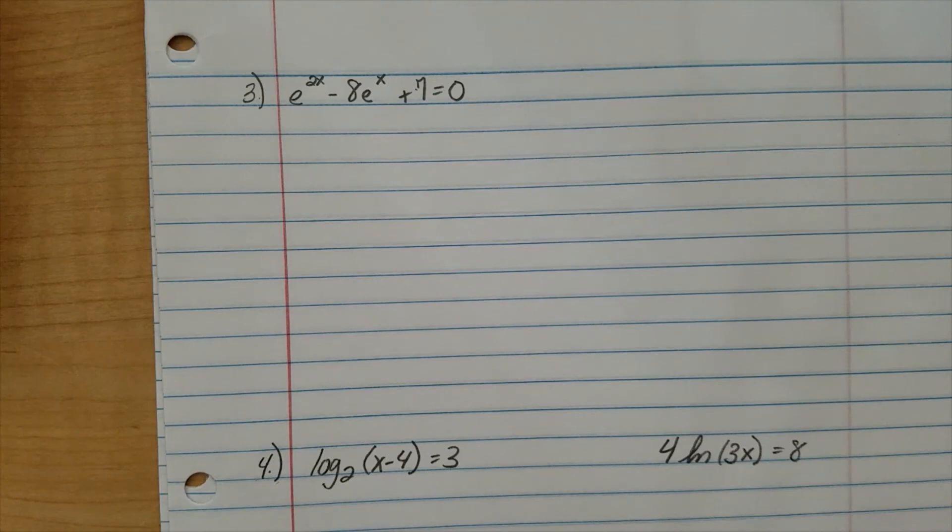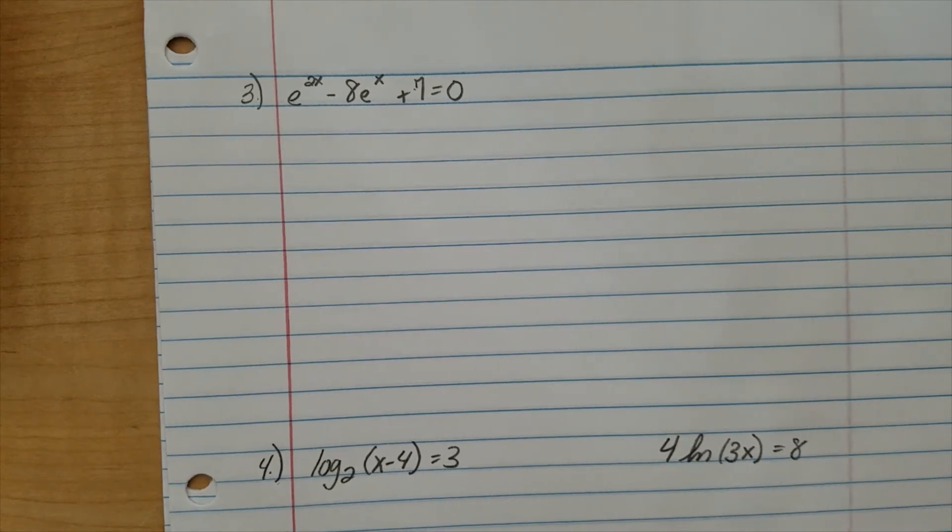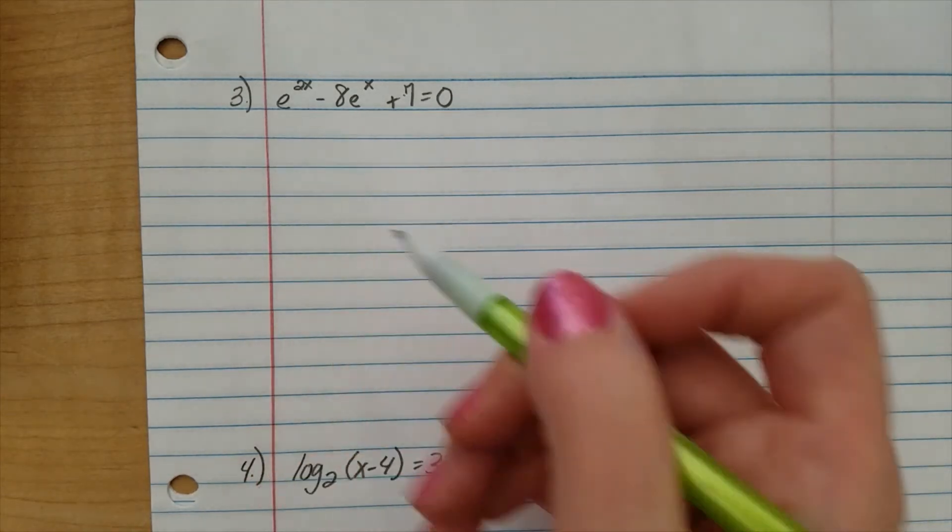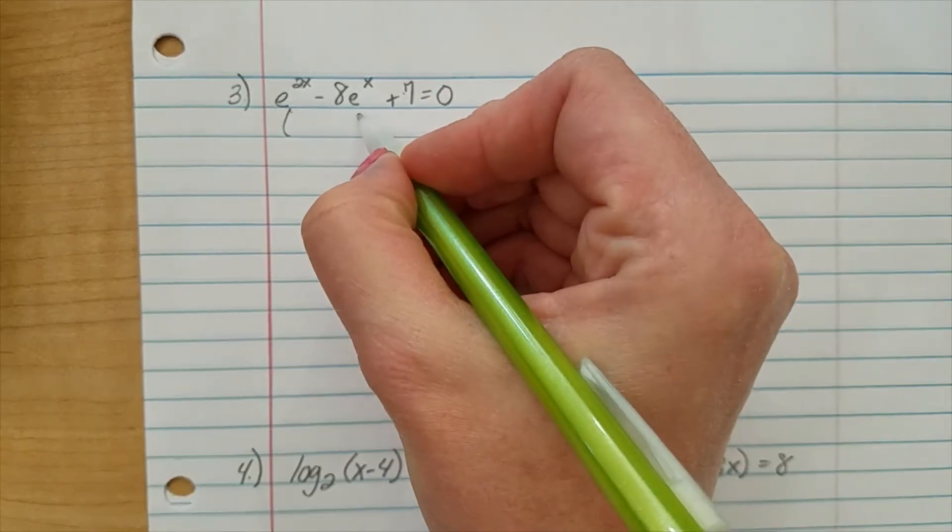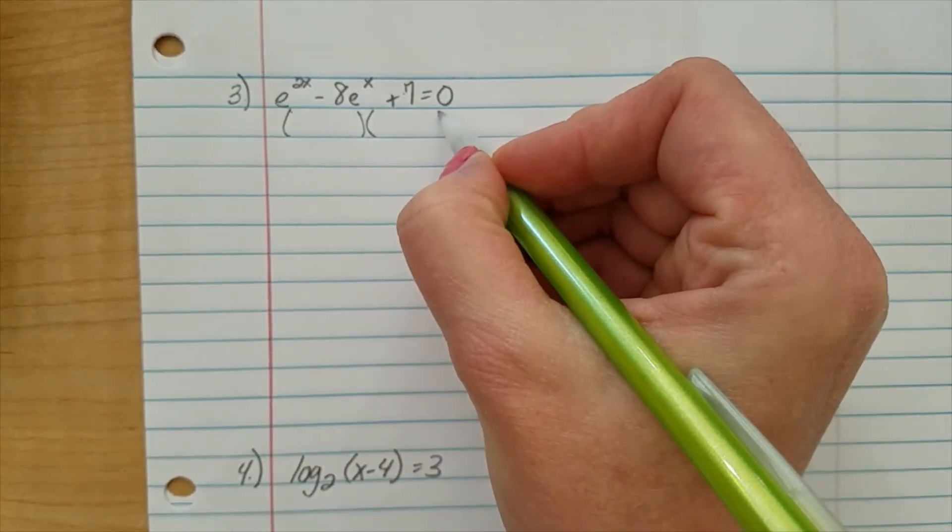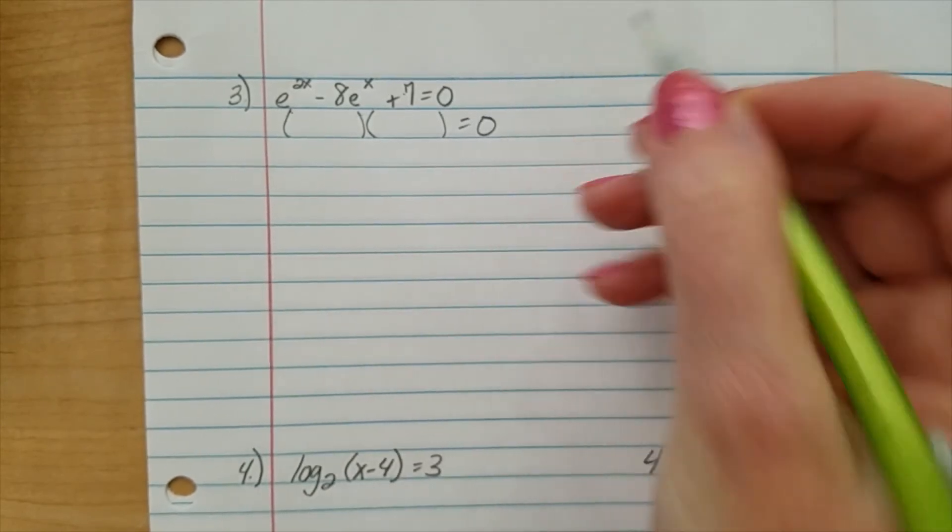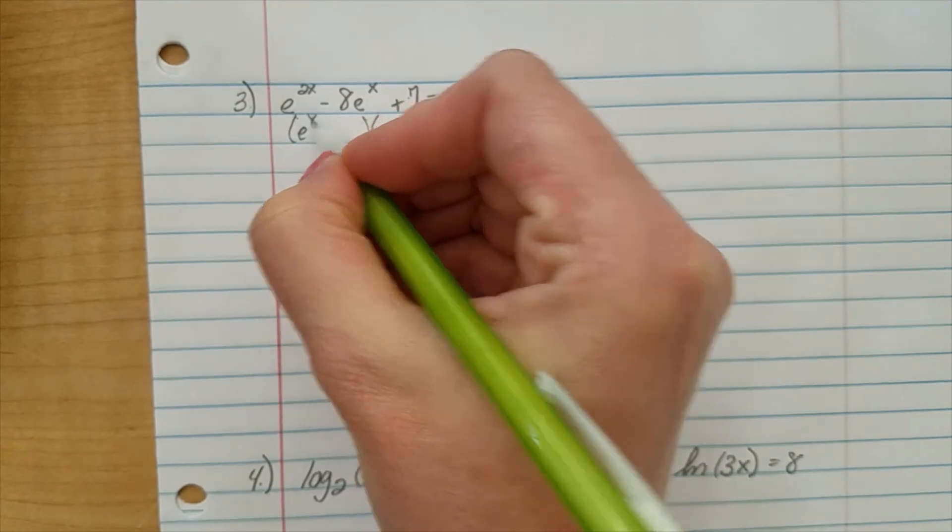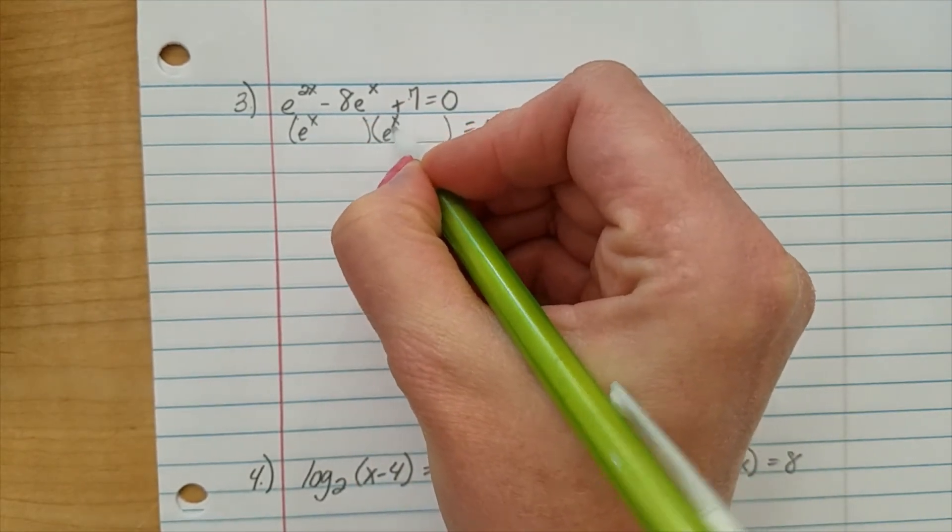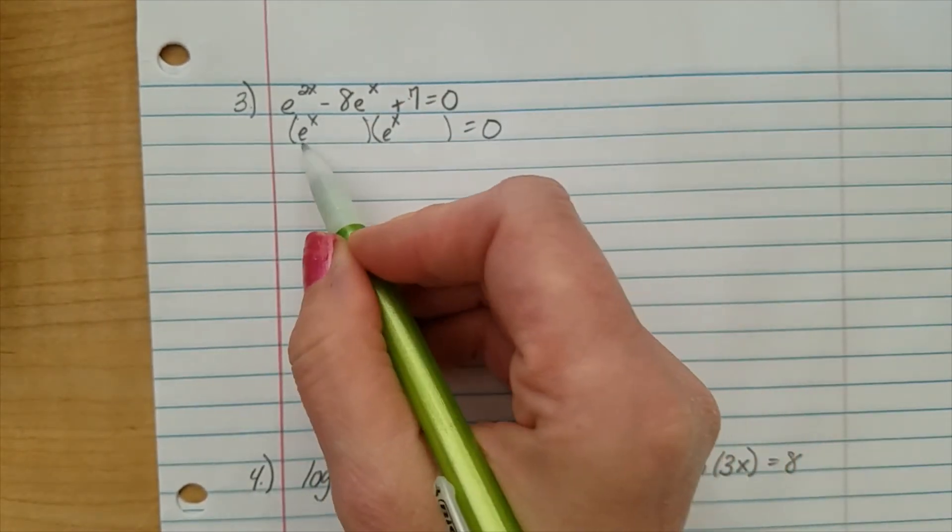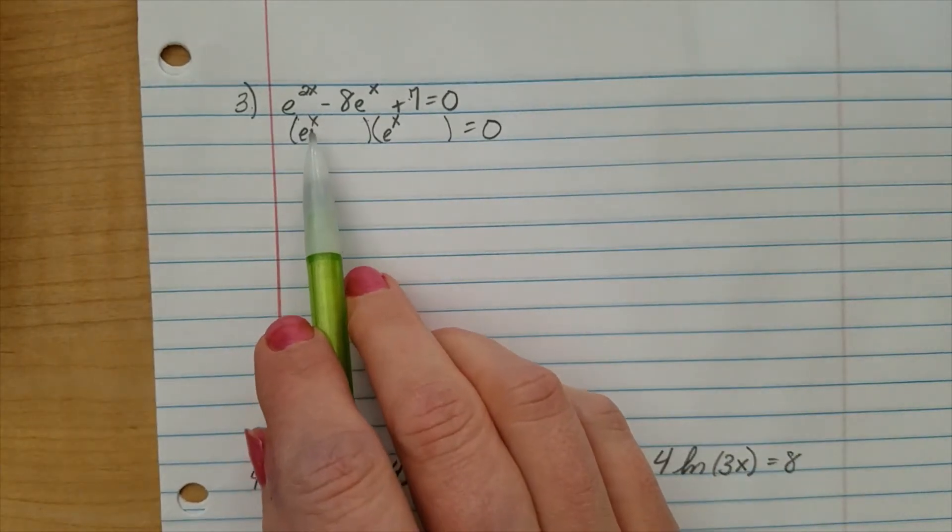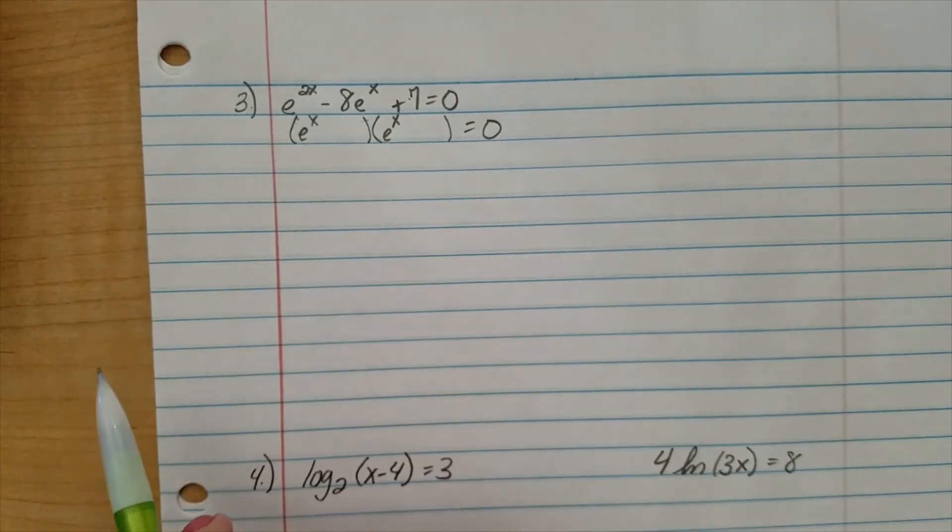Okay, this one, in order to solve, we are going to factor. Now, it's a trinomial, which means we are going to have the product of two binomials. My first term is going to be e to the x. Now, remember, if you were to redistribute this, same base, add exponents, base of e would be raised to the x plus x, which is 2x.